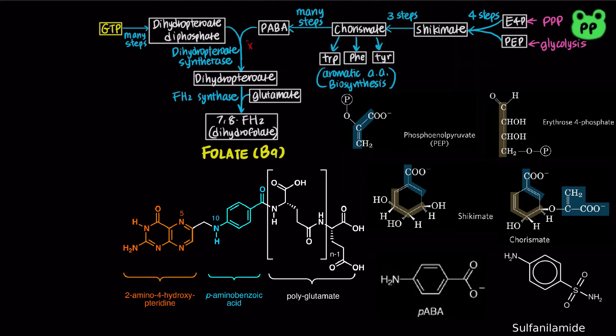The antibiotic sulfonamide disrupts bacterial folate synthesis by inhibiting dihydropteroate synthetase.